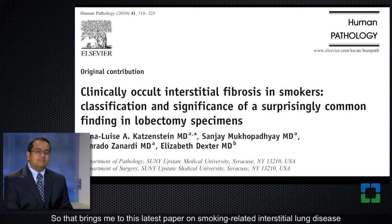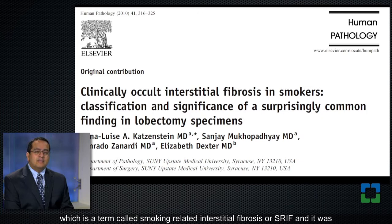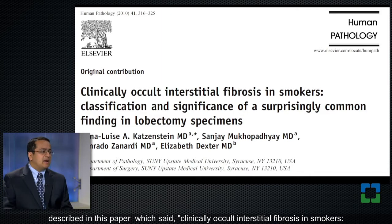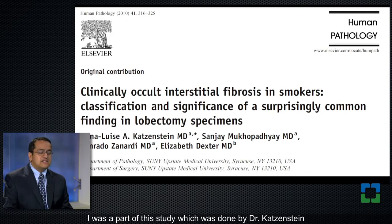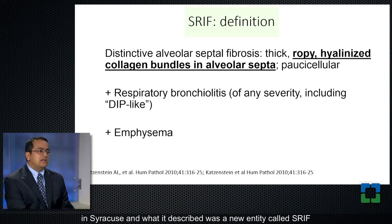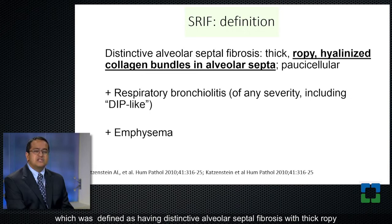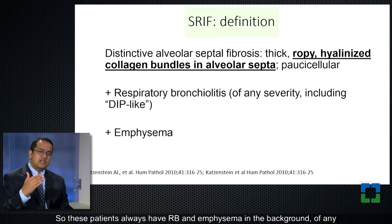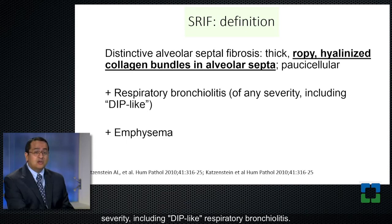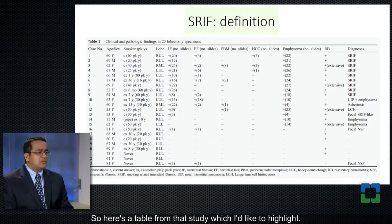So that brings me to the latest entity in smoking-related interstitial lung disease, called smoking-related interstitial fibrosis, or SRIF. It was described in a paper titled 'Clinically occult interstitial fibrosis in smokers: classification and significance of a surprisingly common finding in lobectomy specimens.' I was a part of this study, done by Dr. Kazenstein in Syracuse. What it described was a new entity called SRIF, defined as having distinctive alveolar septal fibrosis with thick, ropey, hyalinized collagen bundles in the alveolar septa — a very paucicellular fibrosis — combined with respiratory bronchiolitis and emphysema. So these patients always have RB and emphysema in the background of any severity, including DIP-like respiratory bronchiolitis.